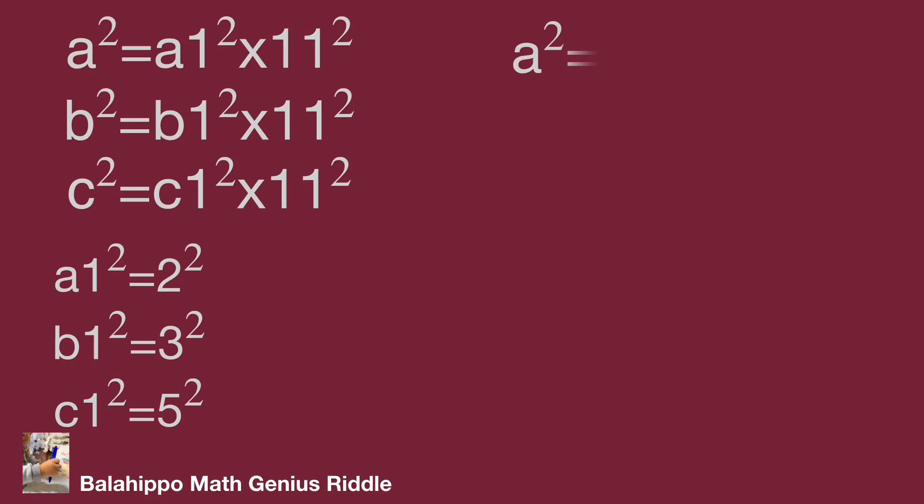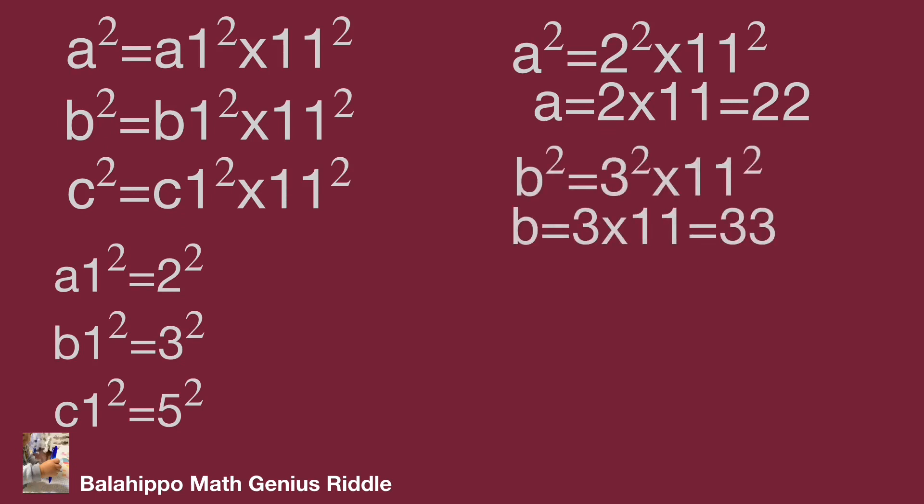a² equal to 2² multiplied 11². a equal to 22. Substitute the same methods. b equal to 33 and c equal to 55.